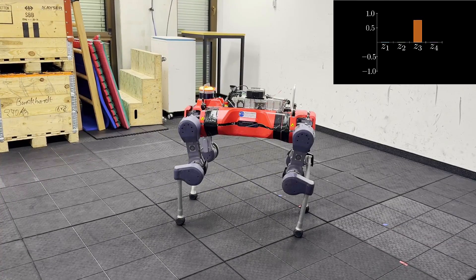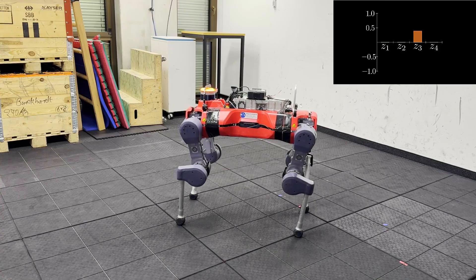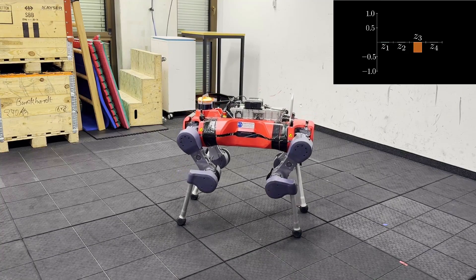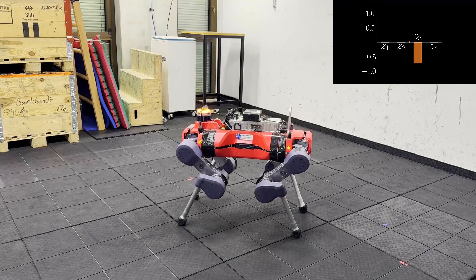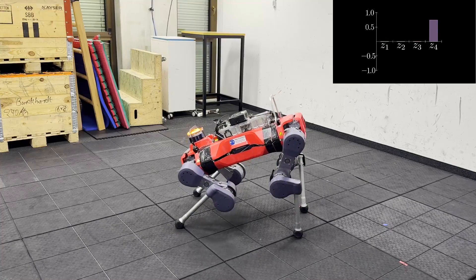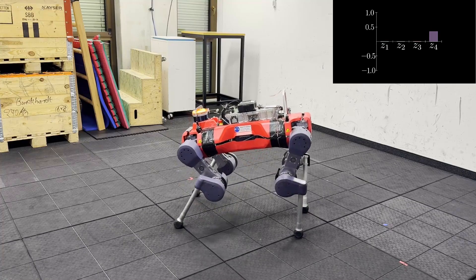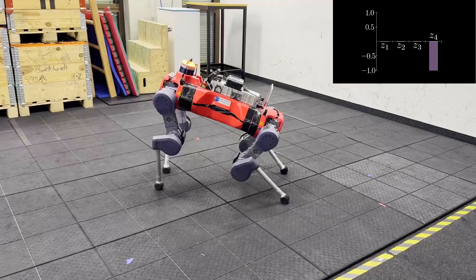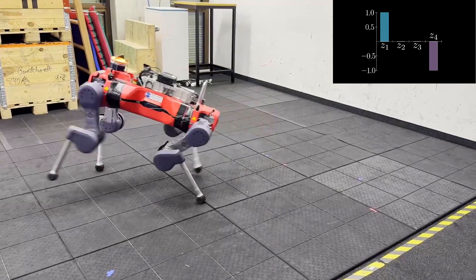Direct control over the base height factor enables behaviors like stretching or crouching. Thanks to symmetry augmentation, the skill for the orientation factor naturally decomposes, providing independent control over roll and pitch. We can also compose the skills.